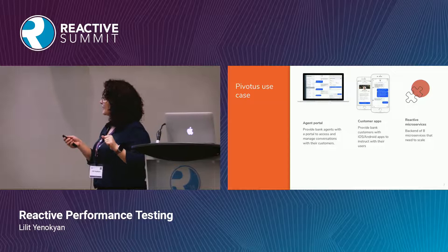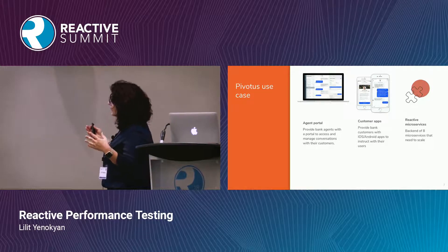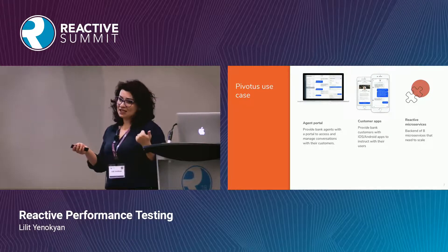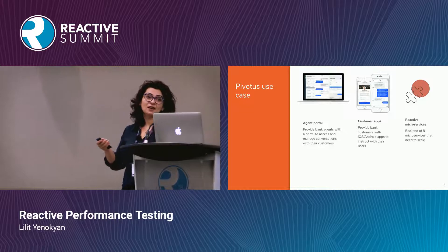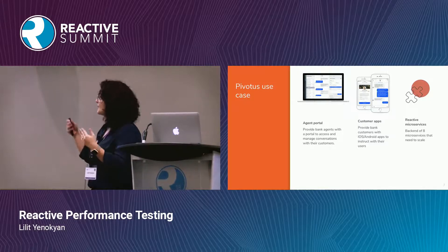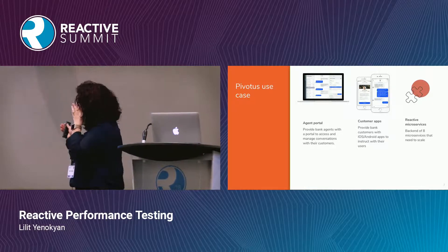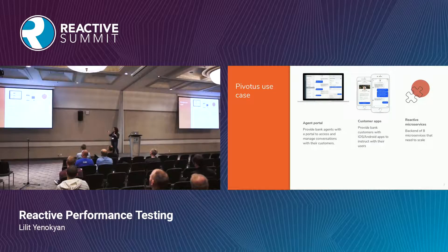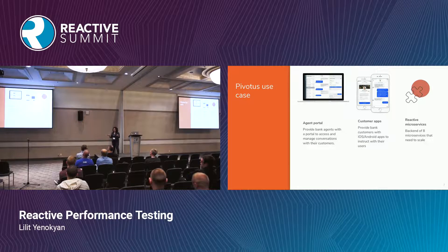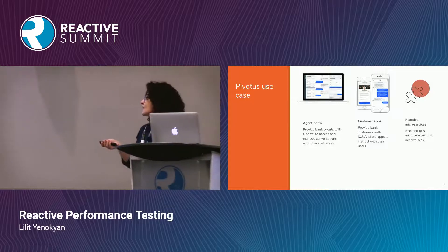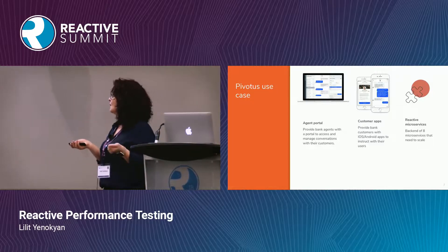To showcase the complexity of the system — it essentially consists of three parts. First is the bank agent portal, where the bank agent can see all their customers, view all their conversations, and different levels of hierarchies where managers can see more. This is a React-based JavaScript system. Then we have the customer apps — both Android and iOS, built with React Native. And then, more importantly for today's conversation, are our reactive microservices. We have eight of them, and they needed to scale.